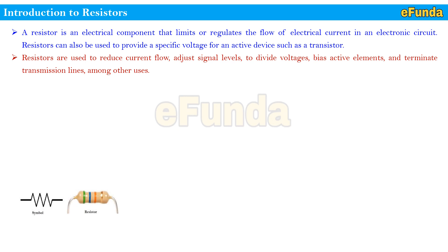Resistors are usually very tiny and it is challenging to print resistance values on them. So color bands are printed on them to represent the electrical resistance. These color bands are also known as resistor color codes. As you can see in the symbol, the symbol of a resistor is shown as a zigzag line, whereas the actual resistor is also shown in the picture.